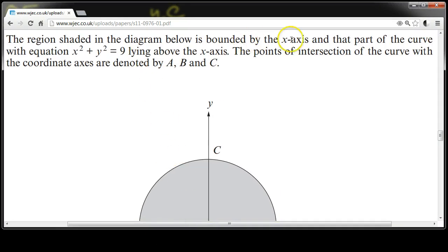The region shaded in the diagram below is bounded by the x-axis and that part of the curve with equation x² + y² = 9 lying above the x-axis. The points of intersection of the curve with the coordinate axes are denoted by A, B, and C.